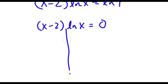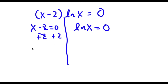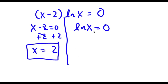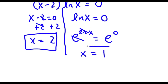This gives me two equations: x minus 2 equals 0, and ln x equals 0. For x minus 2 equals 0, I add 2 on both sides to get x equals 2. For ln x equals 0, I raise e to both sides: e^(ln x) equals e^0, so the e and ln cancel and I get x equals 1. My two solutions are x equals 2 and x equals 1.